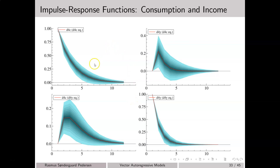When we plot these impulse responses in OxMetrics, we do not automatically get confidence bands on the impulse response functions. Later in this course I will show a piece of code that does the job, and later in this video I will show how to compute the impulse responses for our model.